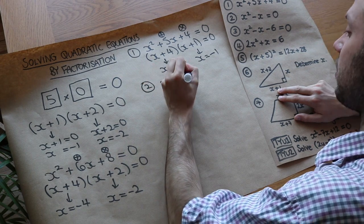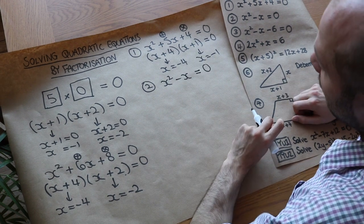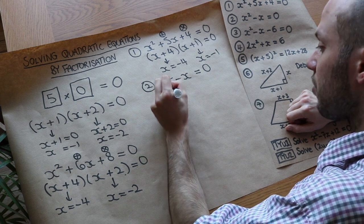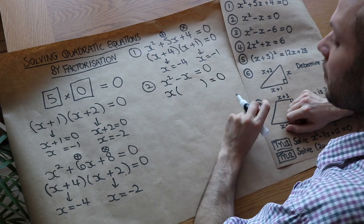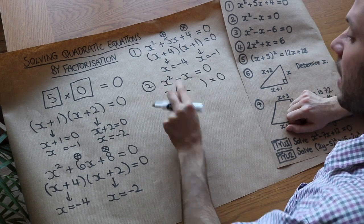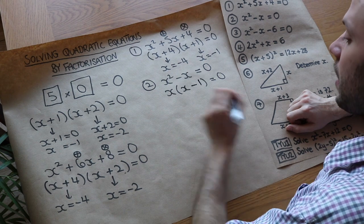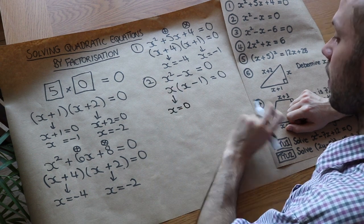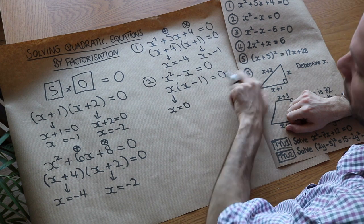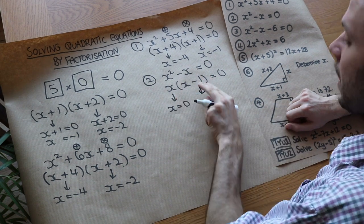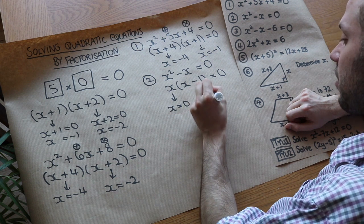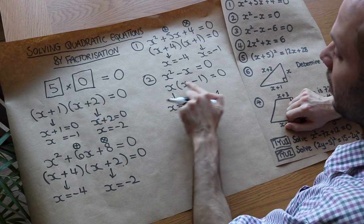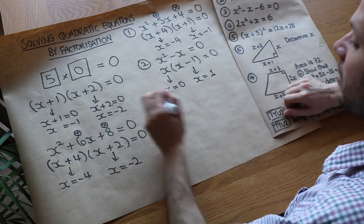Our second example is x squared minus x equals zero. This is a case where we have a common factor — both terms have a common factor of x, so we factorize x out to get a single bracket: x times x minus one equals zero. So either x is zero — and you can see zero times something gives zero — or we negate the minus one to get positive one. So x could also be positive one: one times one minus one, one times zero is indeed zero. That works as a solution.